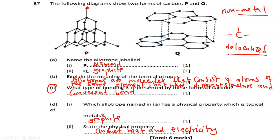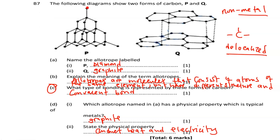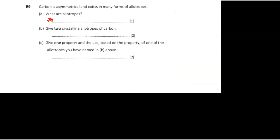Let us now answer another question on this topic. The question states: carbon is asymmetrical and exists in two forms of allotropes. What is an allotrope? We have already defined this — allotropes are molecules that consist of atoms of the same element, but having different structure and geometric shapes. The two crystalline allotropes of carbon are graphite and diamond.